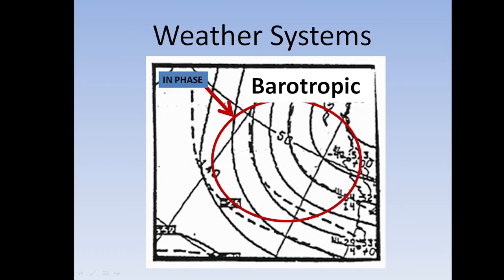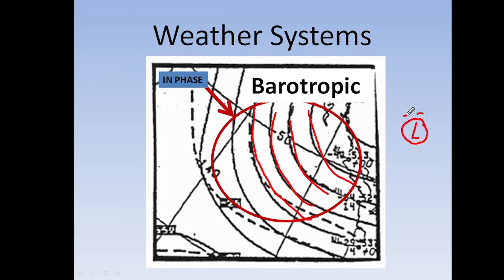Barotropic is where the isotherms and isobars are in phase — you can see they're parallel to each other, so there's no thermal advection. Like a hurricane, there's a warm core low, so you'll have your isobars and your isotherms in phase. That is a warm core system.